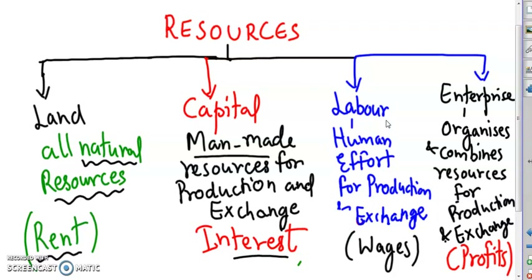Thinking of these within your classroom setup, you can think of the water and the air that you have as land. The building that you're sitting in, the classroom, your smartboard, whiteboards, pens — everything is a part of capital, because there is a production process taking place in your classroom. Labour is your teacher and enterprise is the school or the organization you're studying in.